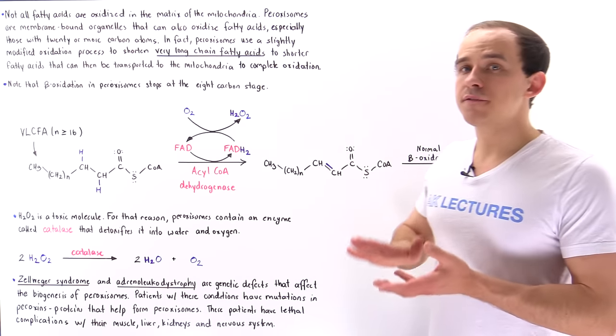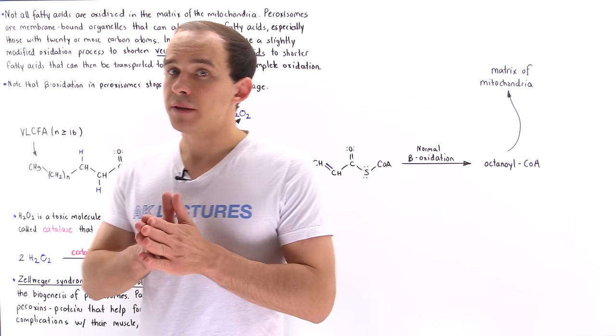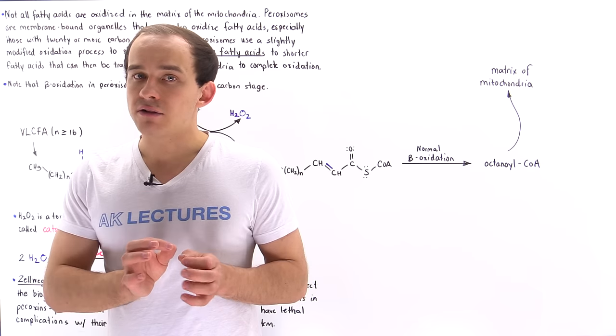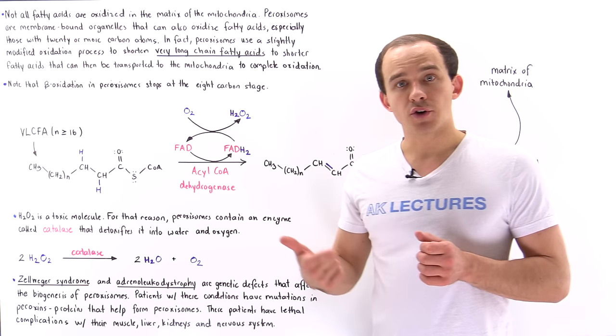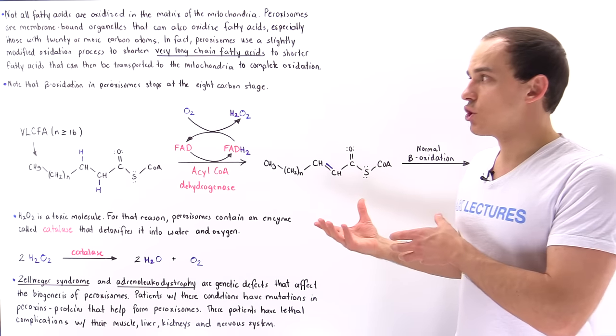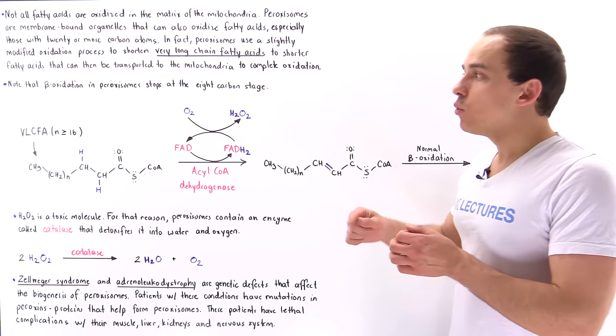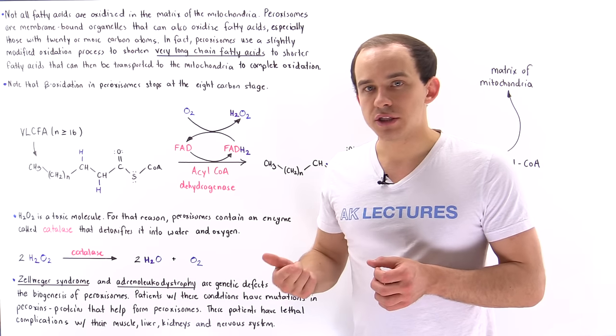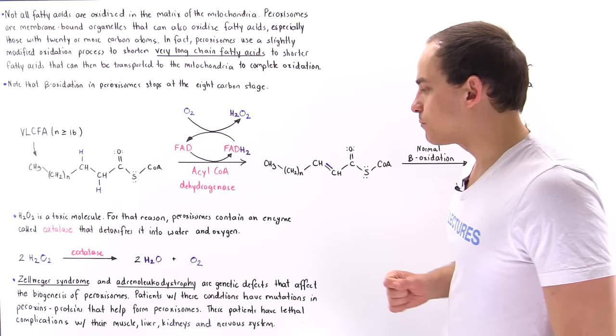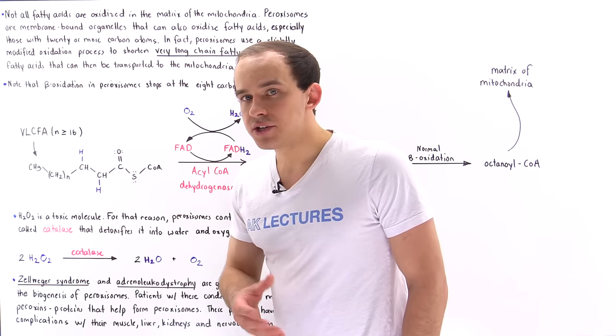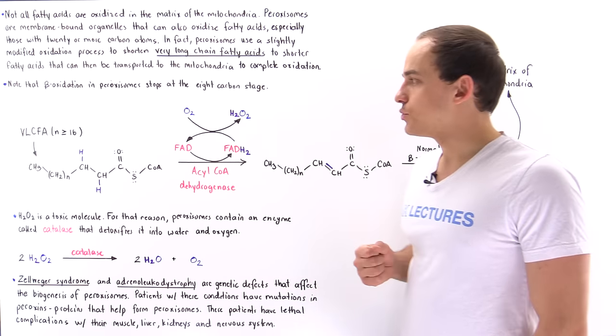In addition, peroxisomes have other functions. For instance, peroxisomes also synthesize those lipid molecules that are found in a myelin sheath around neurons, around the axons of neurons. And so if peroxisomes do not actually form correctly, what that means is we cannot form the myelin sheath. And so individuals with these conditions will basically have problems with their muscle tissue, with their liver, with their kidneys, as well as with the nervous system and other tissues.